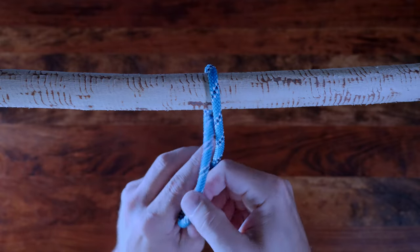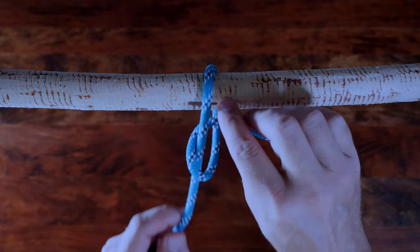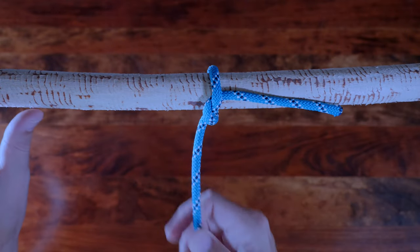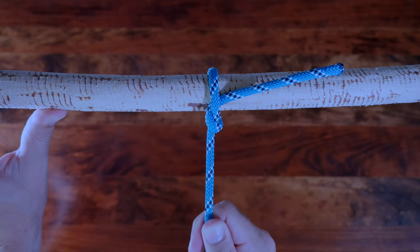The half hitch is pretty insecure on its own, but it's a valuable knot to learn because it's a fundamental component of a wide variety of useful and reliable hitches.